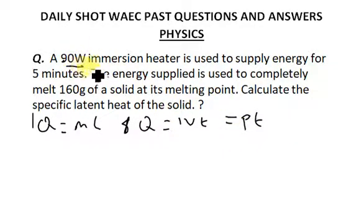They give us the mass of the solid we are melting to be 160 grams, and we are asked to calculate the specific latent heat. So Q = mL and Q = IVt, which equals Pt.